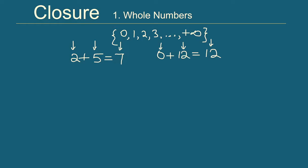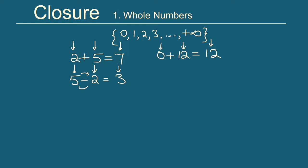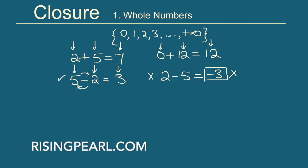Now let's talk about subtraction. Take whole number 5 and subtract 2 from it: 5 minus 2 is 3, which is a whole number. But what if we reverse the order — take whole number 2 and subtract 5 from it? The answer is minus 3, which is not in our collection of whole numbers. So we cannot guarantee the outcome will always be a whole number. We say that whole numbers are not closed under subtraction.